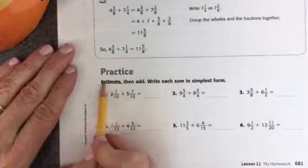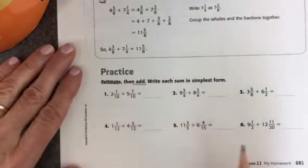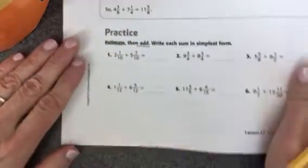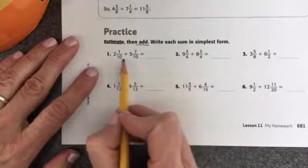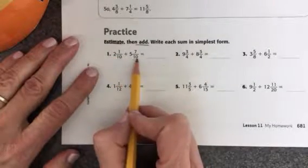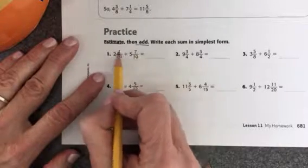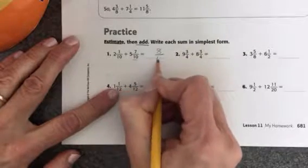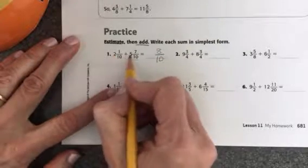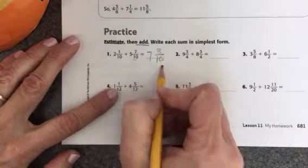Down here it says to estimate. We're not going to estimate. The skill we're working on is adding. So I can see on this one right here 2 and 1 tenths plus 5 and 7 tenths I already have a common denominator. So I can just add across the top here 1 plus 7 is 8. So I'll have 8 tenths and 2 plus 5 is 7. So I have 7 and 8 tenths.